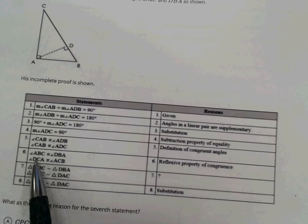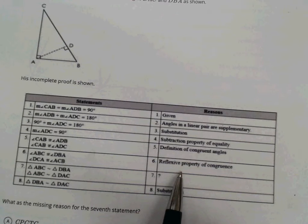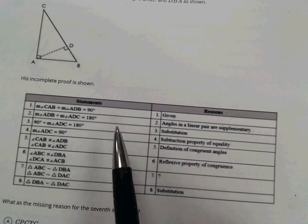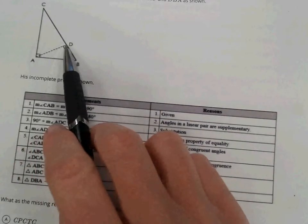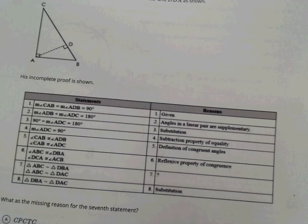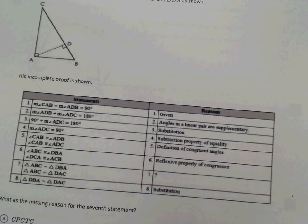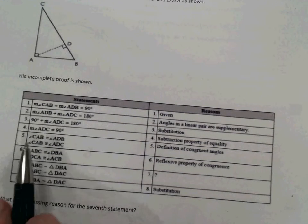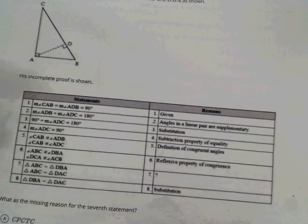the same for CAB and ADC. Now we can go ahead and say angles ABC and DBA are congruent by the reflexive property of congruence. So the very next step indicates that the triangles are similar. And we have demonstrated that two pairs of angles are congruent, which would give us the reason of the angle-angle postulate.